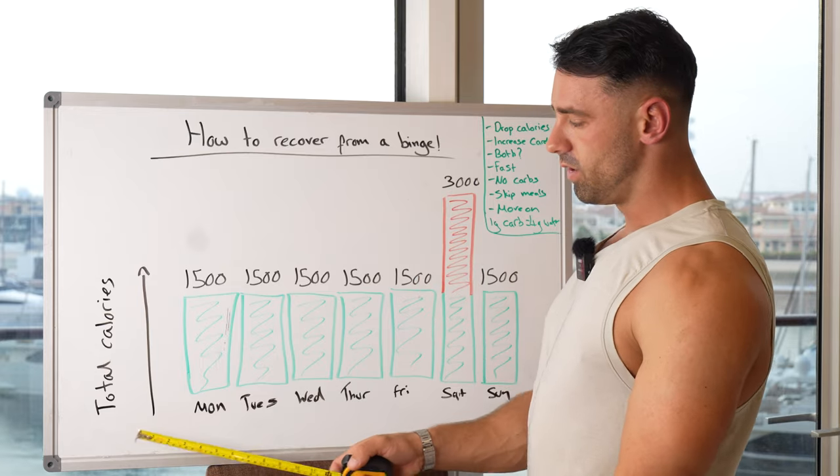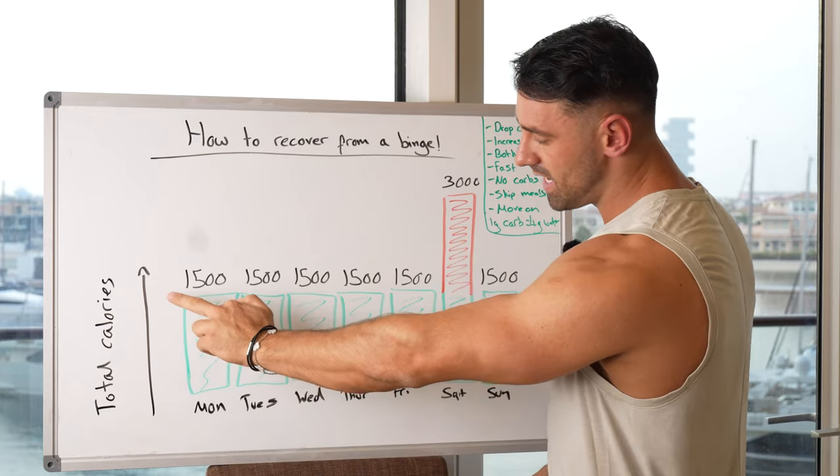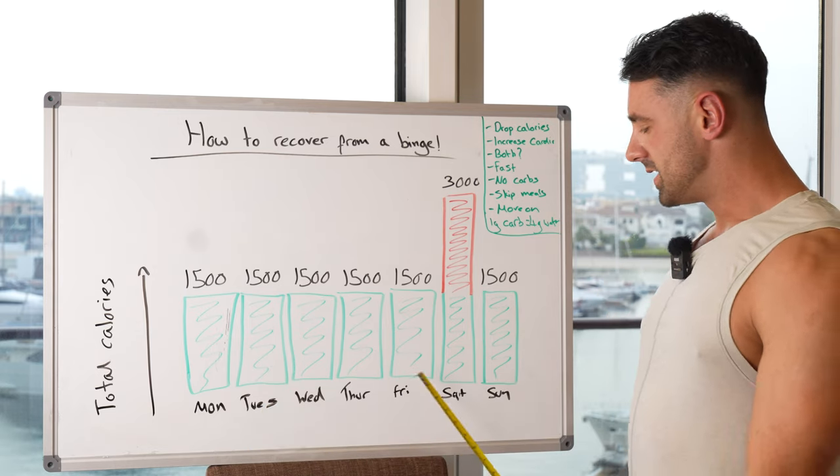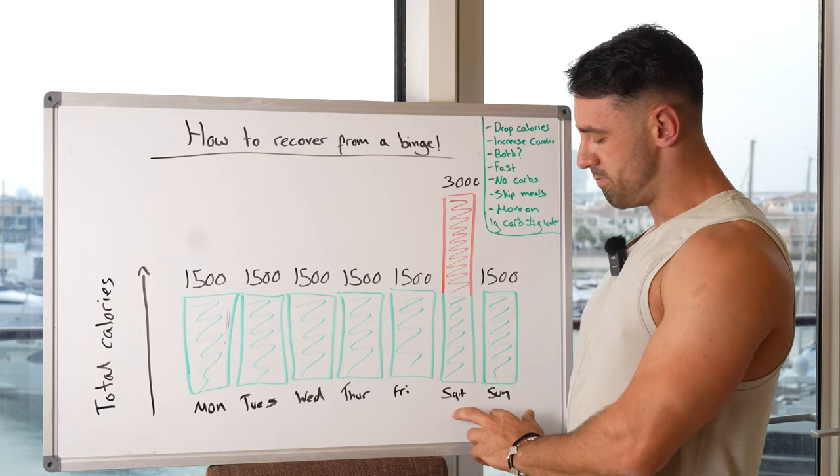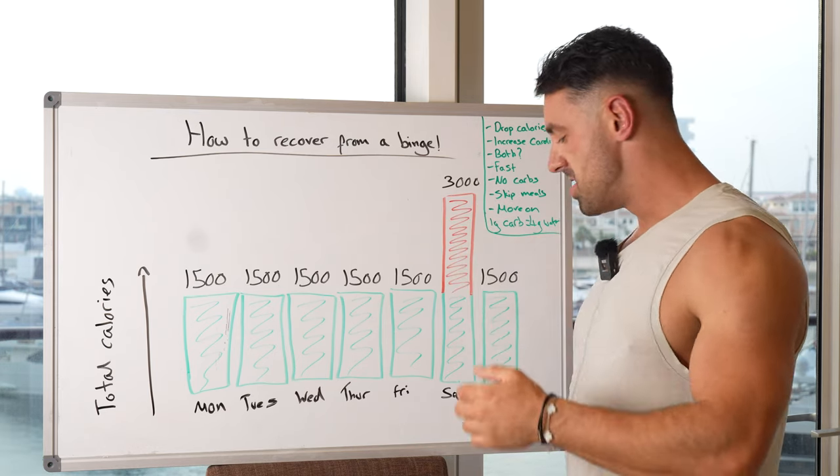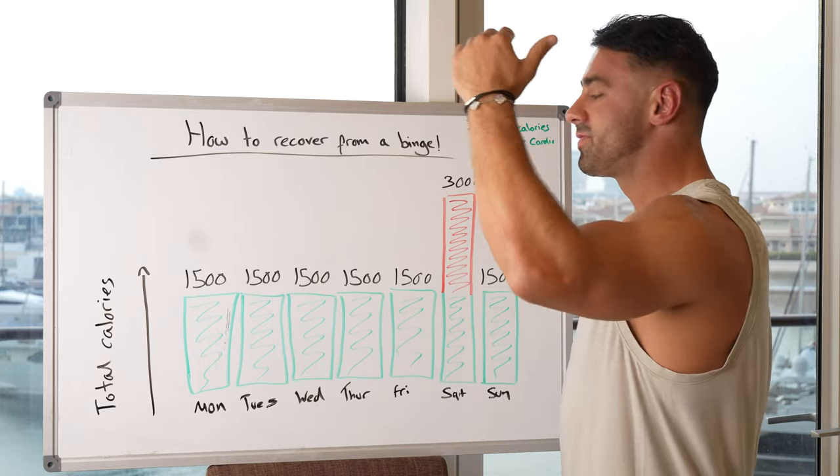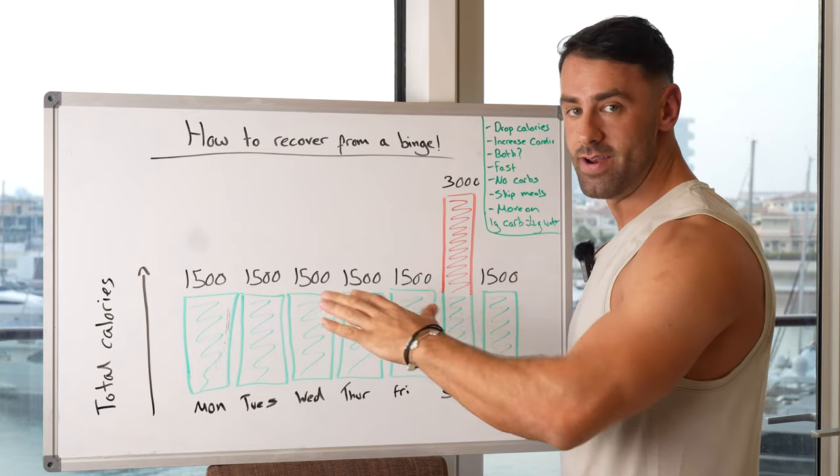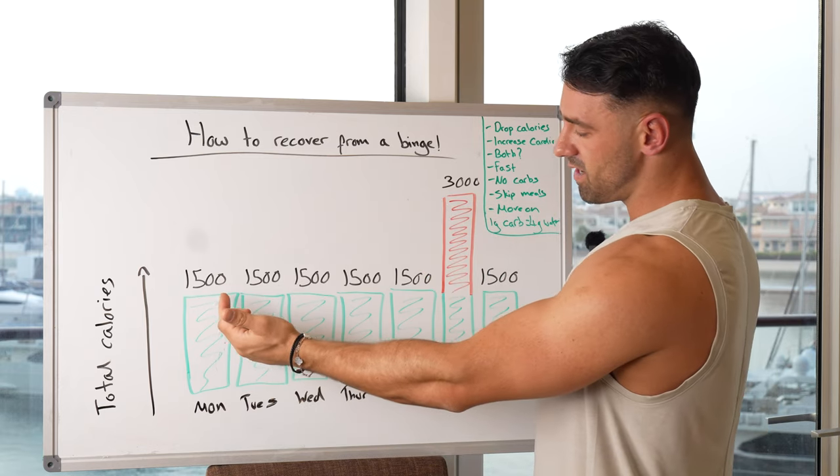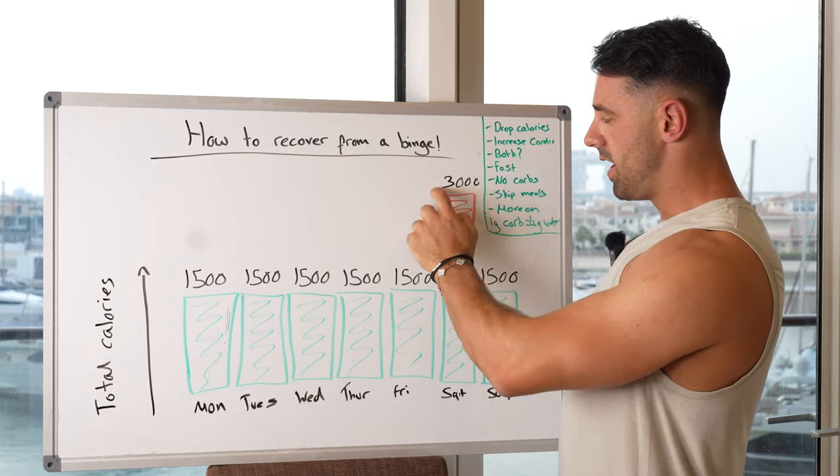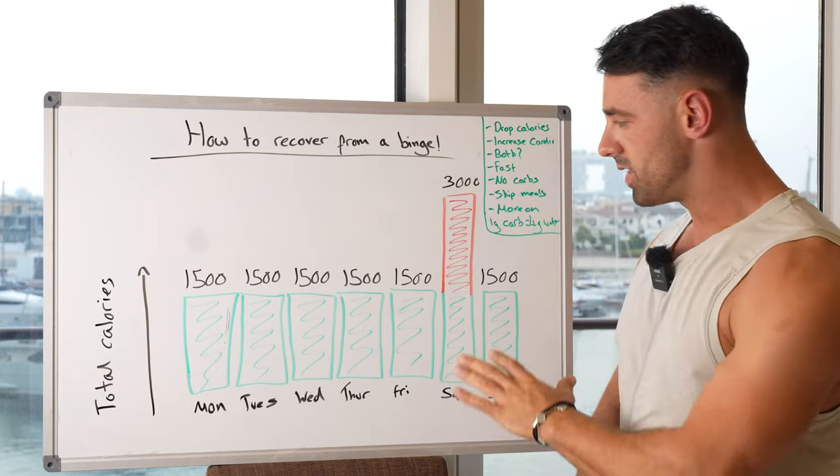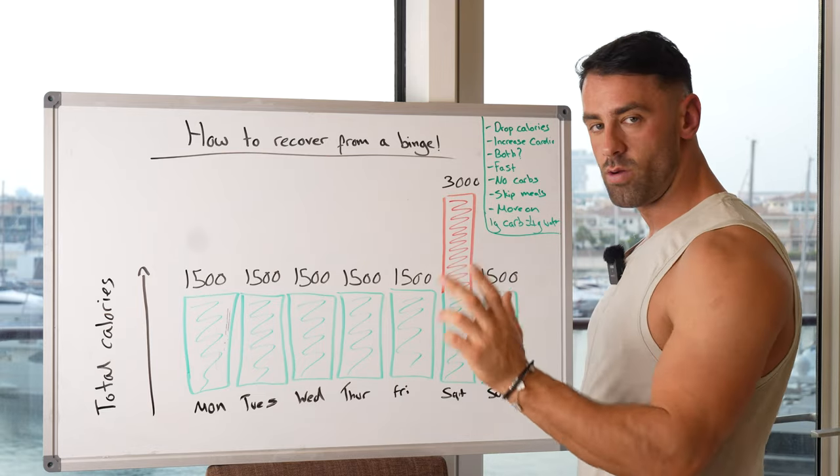First things first, if you look at my awesome graph here, total calories here we're at 1500 calories per day, Monday to Sunday. And we can see this person, let's say Max for example, Max has absolutely sent it on a Saturday night. We're talking espresso martinis, burgers, chips, everything, it's a disaster. 3000 calories. So as you can see we have a deficit of 1500 across the week and we've shot up here. Now it's easy to think, you know what, I've blown it, the week's over but there's so many ways we can recover from this.